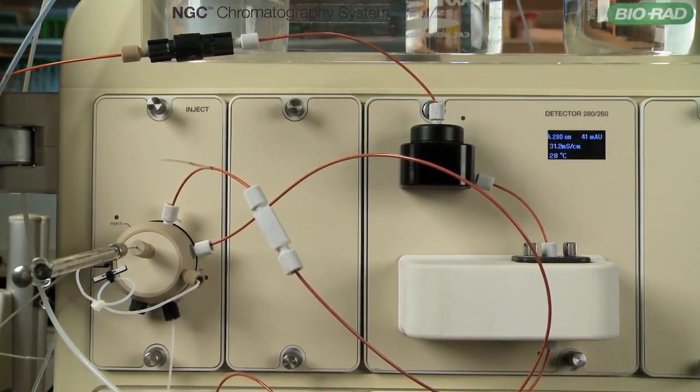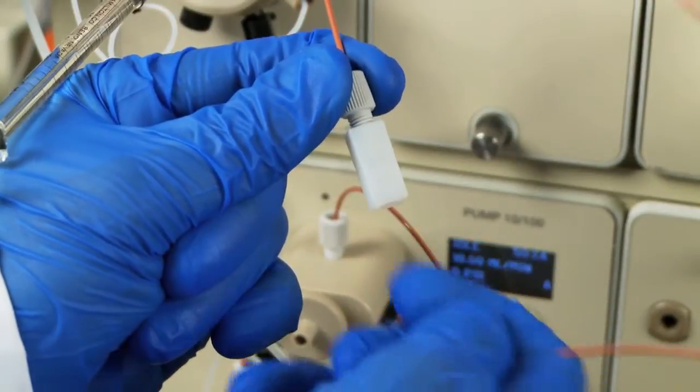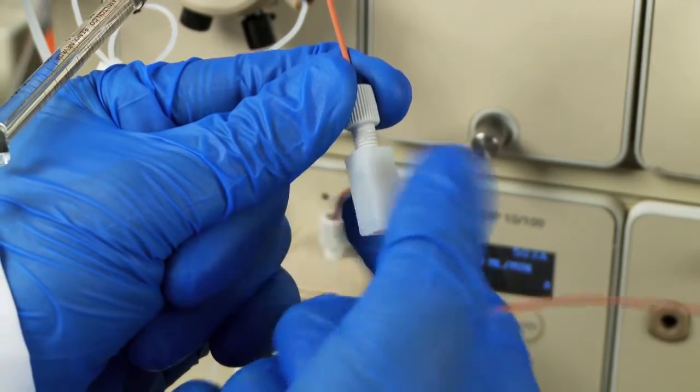When attaching the column, use only the fittings that match your column. Begin by disconnecting the union connecting the injection valve and UV detector.